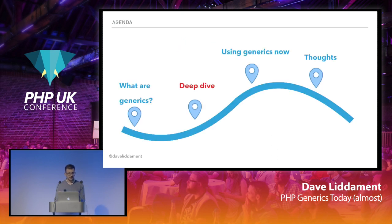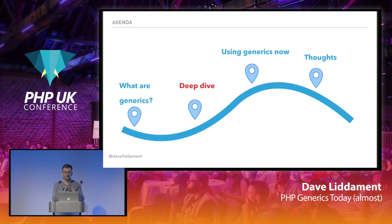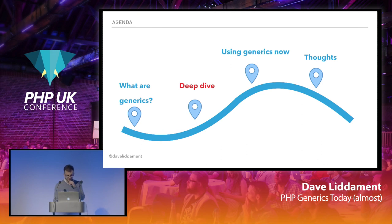That was our first section — what are generics. We're now going to do a deep dive into generics, covering five areas. This can get a bit complicated. If you get lost, don't worry — I'll share a Git repo at the end with fuller examples of all these code snippets so you can look at them for yourself. If you do lose it, come back for the third section.